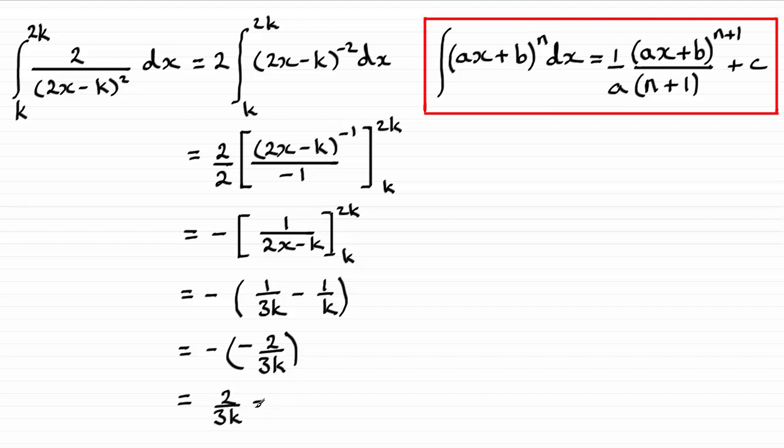Or you could see this as 2 thirds times 1 over k. Either way, what we've got then is that this result is inversely proportional to k. And that's what we had to show. That the result was inversely proportional to k. Alright, so I hope you're able to see my method through there.